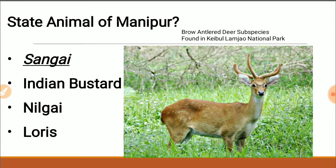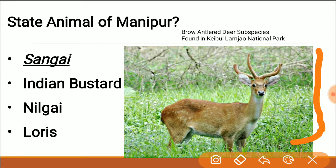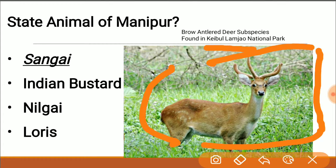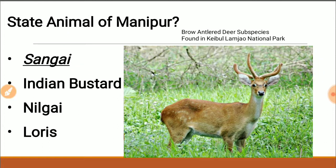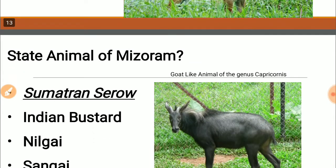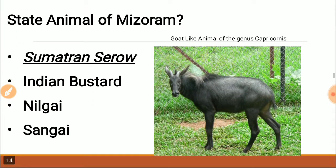The state animal of Manipur is the Sangai. As you can see, it is a form of deer — actually a subspecies of the brow-antlered deer — found specifically in the Keibul Lamjao National Park, the only floating national park in the world. It is called the Sangai, and it is the state animal of Manipur.